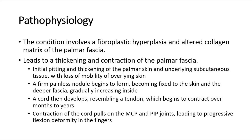Next, a cord then develops, resembling a tendon, which begins to contract over months to years. Lastly, contraction of the cord pulls on the MCP and PIP joints, leading to progressive flexion deformity in the fingers.